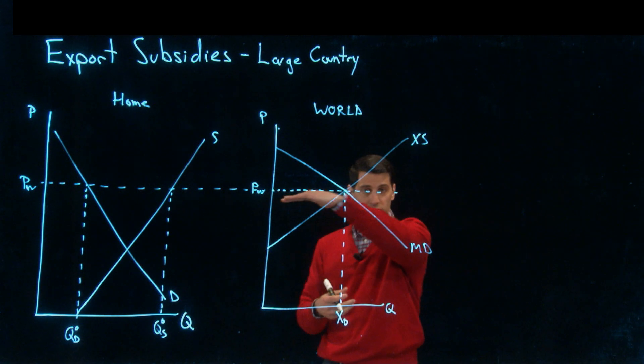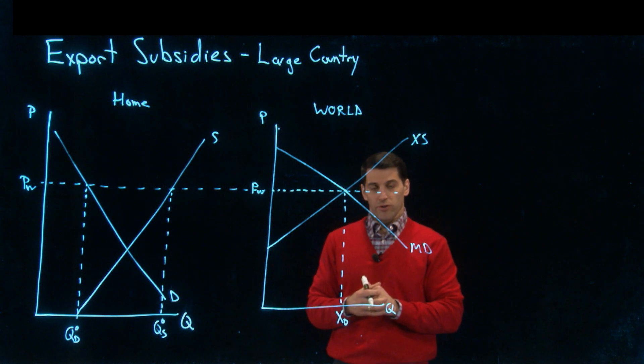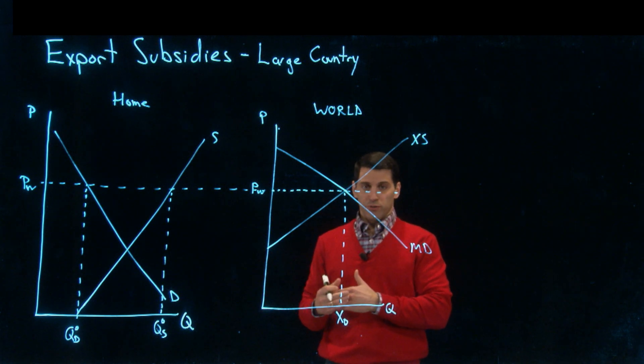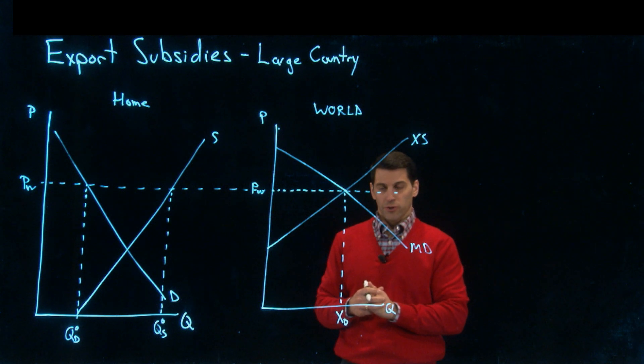Instead of having a horizontal import demand curve, we see that from the home country's perspective they're facing a downward sloping import demand curve.